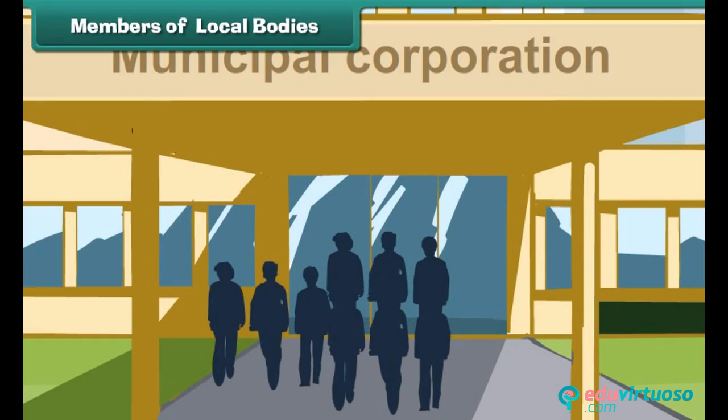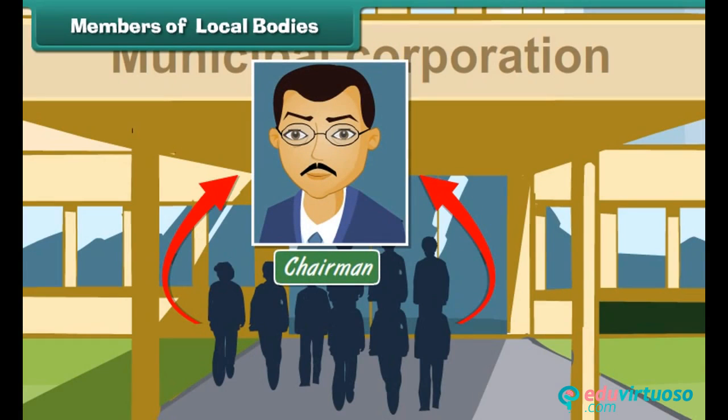The elected members of a municipal committee or corporation elect their chairman. In big cities, the chairman is called the mayor. He is the head of a municipal committee or corporation.